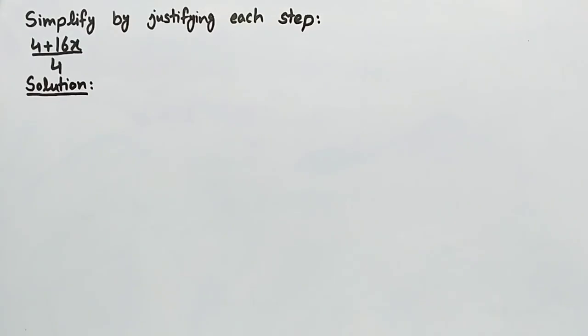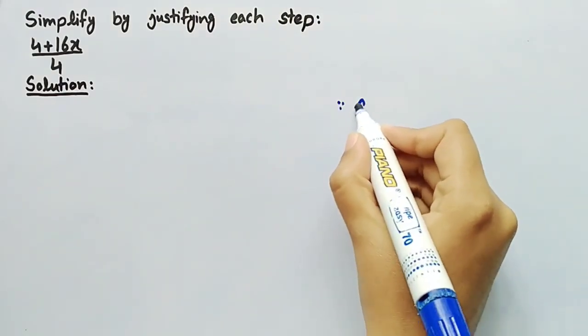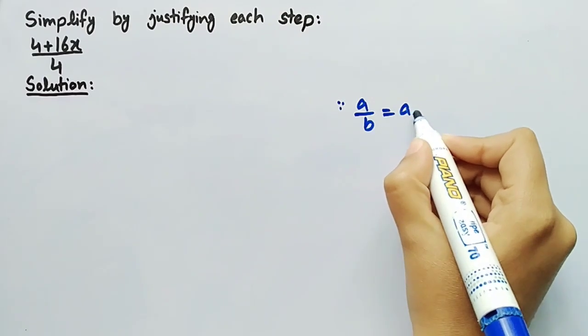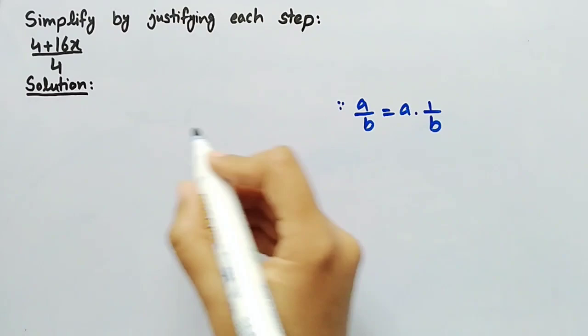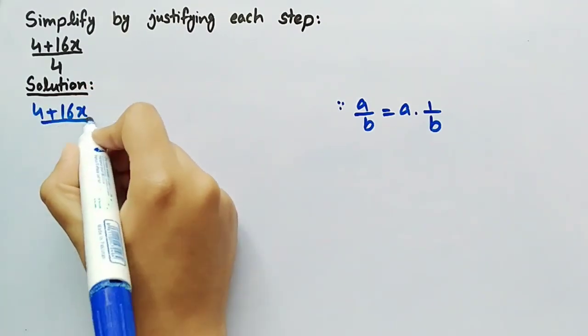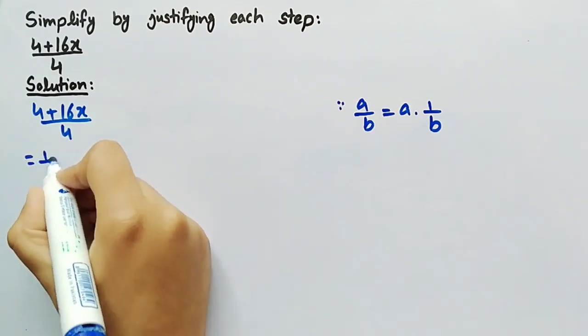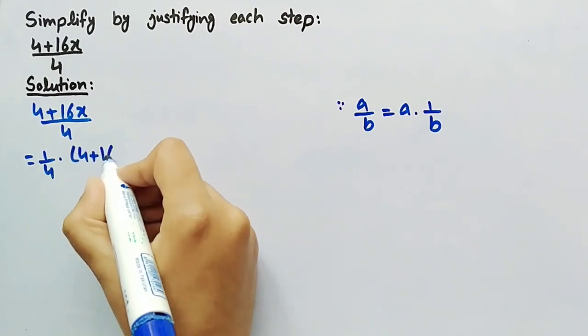Now coming towards its solution. Since we know that a by b can be written as a multiplied by 1 by b, so by using this property, we can write 4 plus 16x divided by 4 as 1 by 4 into 4 plus 16x.